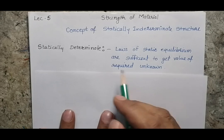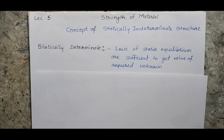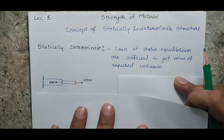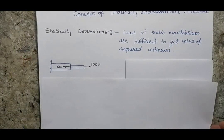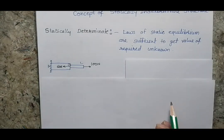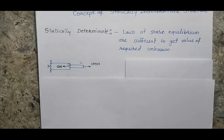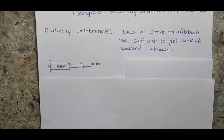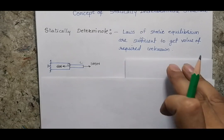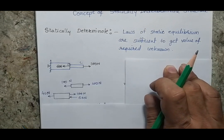Before we understand the statically indeterminate structure, let's first understand which structure is statically determinate. Basically, whenever we are able to apply the laws of statics and get all the unknown values, the system comes under the category of statically determinate structure. For example, if I have a bar and I want to find forces in two members — say sections AB and BC — we first make the free body diagram and calculate the unknown values. If our laws are sufficient to get all the unknowns, the system is statically determinate.